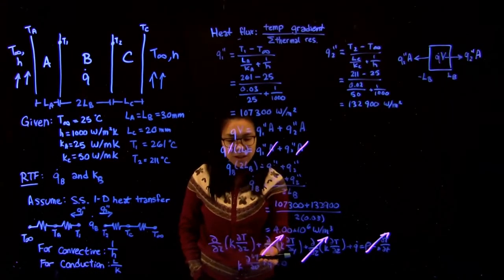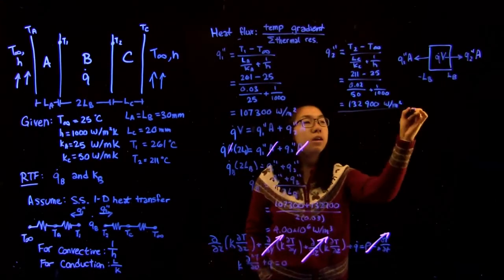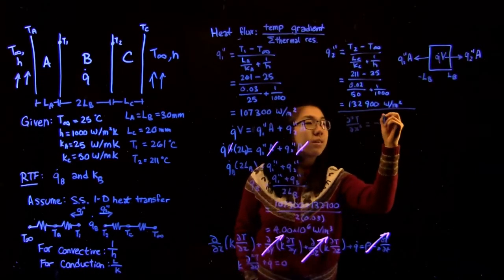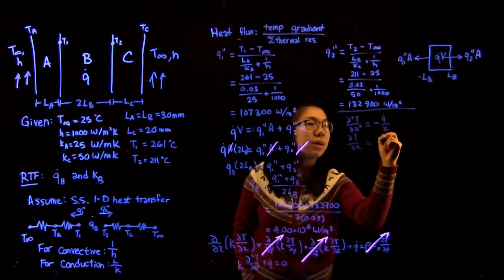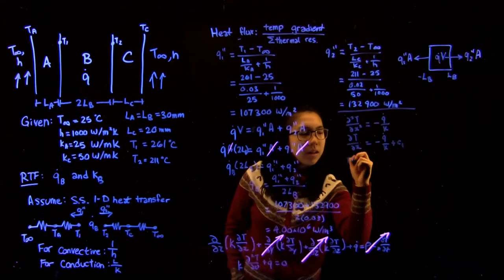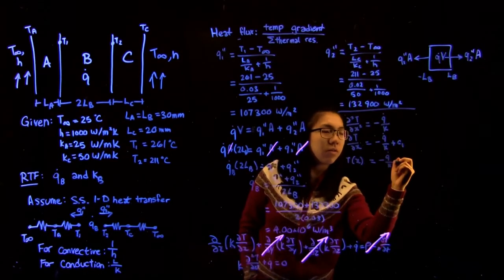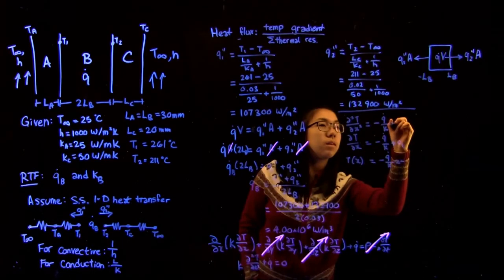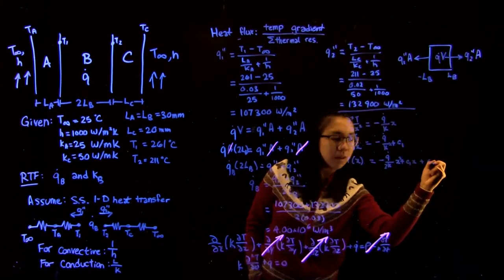The next thing we want to do is integrate this. We have that di squared t by di x squared is equal to minus q over k. Taking the integral, di t by di x is equal to minus q over k x plus a constant. And the actual temperature profile is equal to minus q over 2k x squared plus c1 x plus c2.